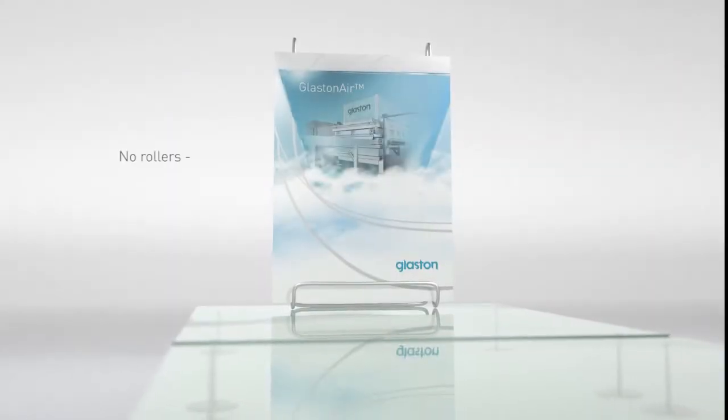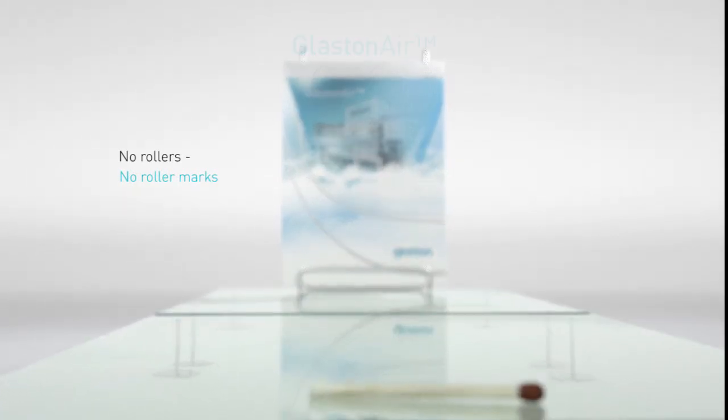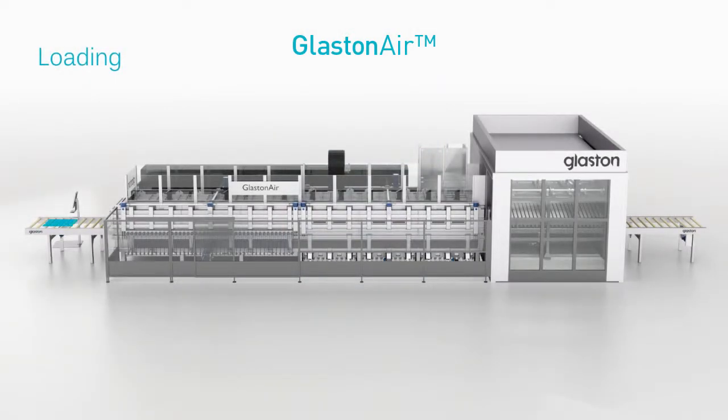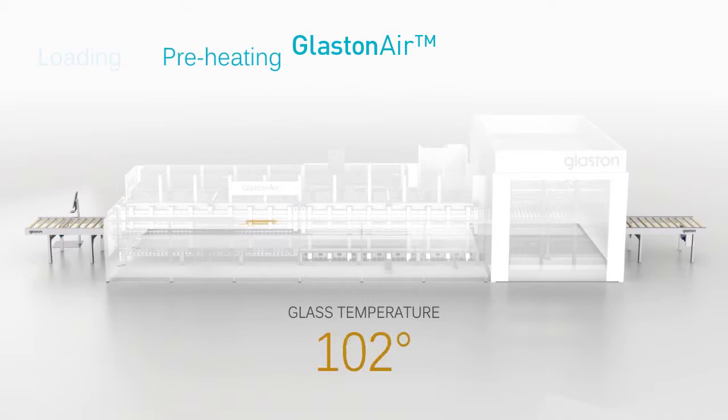One of the greatest advantages of Glastonair is that it doesn't leave any roller marks on the glass. Glass is conveyed on rollers only in the preheating phase where the processing temperatures are still relatively low. Because of this, the glass stays practically free from roller waves and other roller marks.